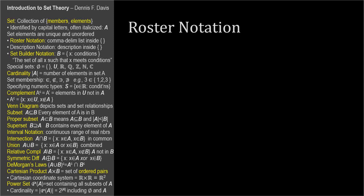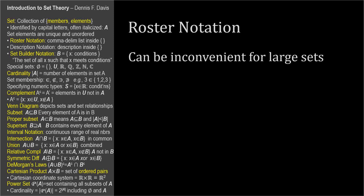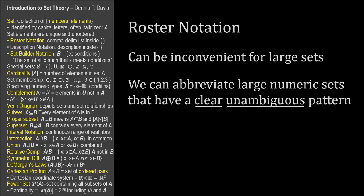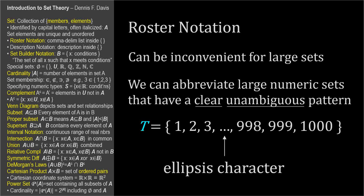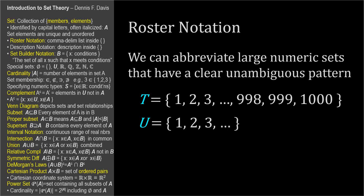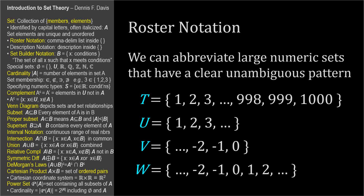Roster notation is very clear and explicit, but it can be inconvenient for large sets. For example, if set T contained the integers from 1 to 1000, it would be quite tedious to write or read the list. If a list has a clear, unambiguous pattern, we can use an ellipsis — the dot dot dot character — to substitute for part of the pattern, so we could write a statement to define set T as the set of all integers from 1 to 1000. An ellipsis at the end of the series means the pattern continues forever. An ellipsis can also appear at the beginning of a roster list, or at the beginning and end. These denote infinite sets. Infinite sets have an infinite number of elements. Finite sets have a finite number.